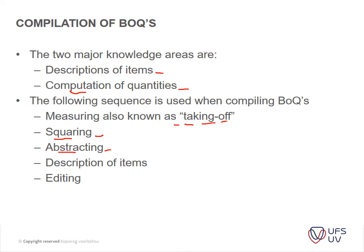For instance, if you measure foundation wall length, that length can be used for both brickwork in foundations and in the superstructure. The amount you've taken off is squared and then allocated or abstracted to different items. Similarly, a square meter measurement for tiling can be used again for ceilings, and the circumference can be used for both skirtings and cornices. Squaring is grouping your items together, and abstracting is allocating them to different items in your BOQ.